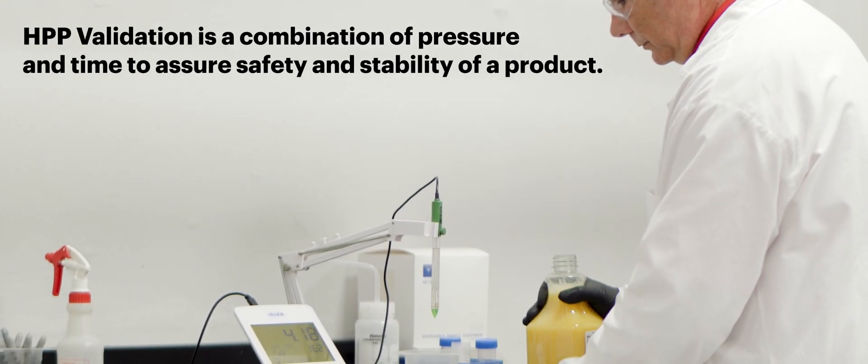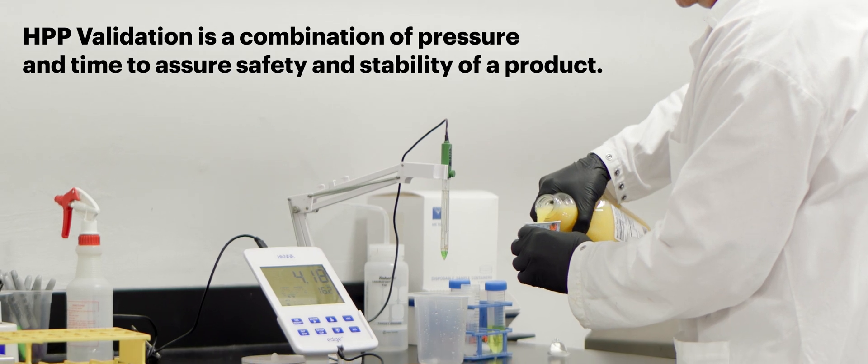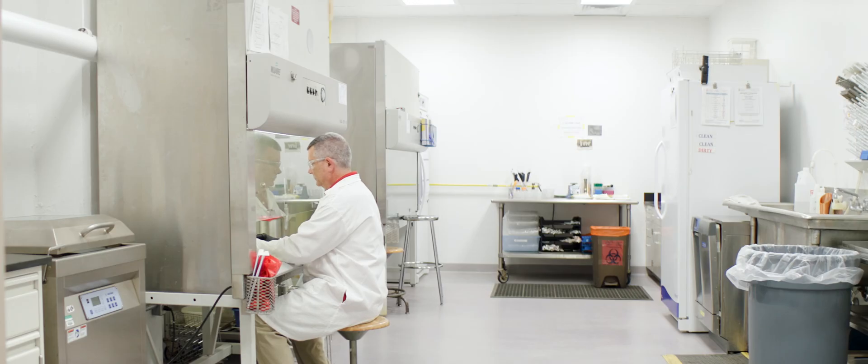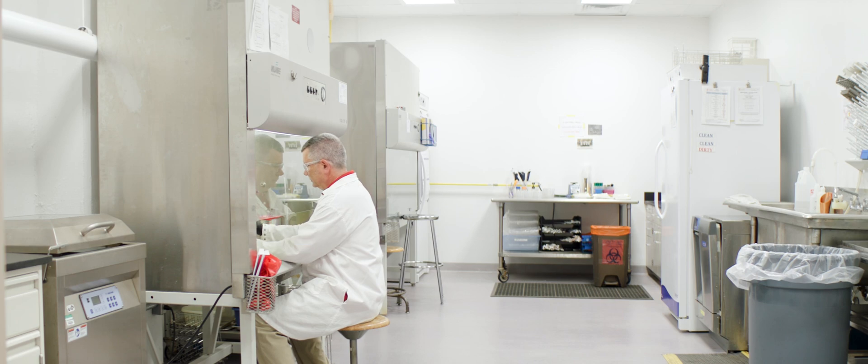At the Cornell HPP Validation Center, we have validated many products such as hummus, guacamole, salsa, many juices, and fruit purees.